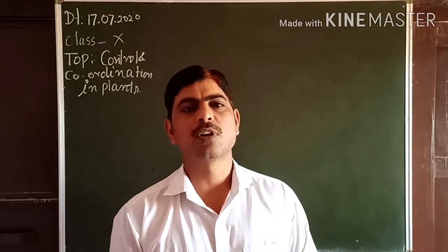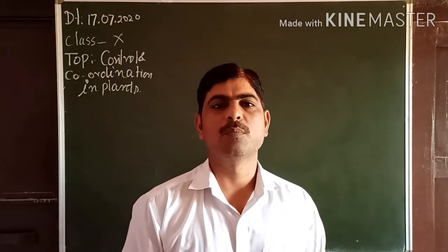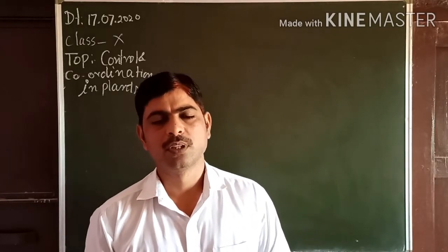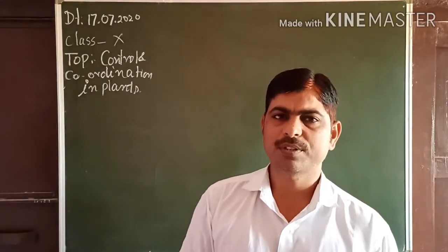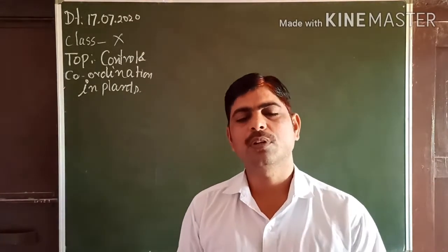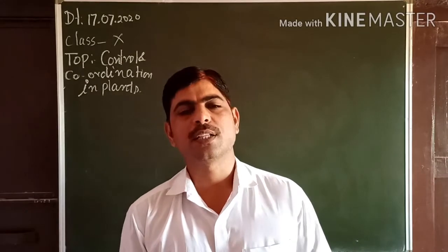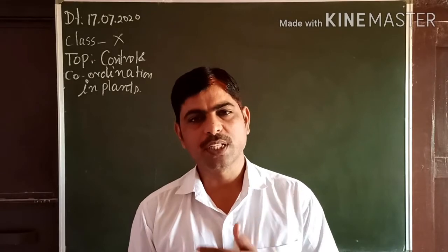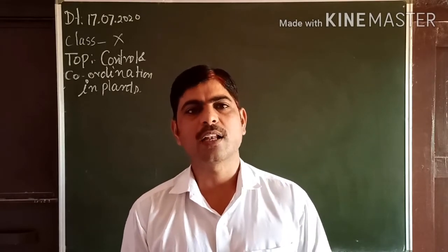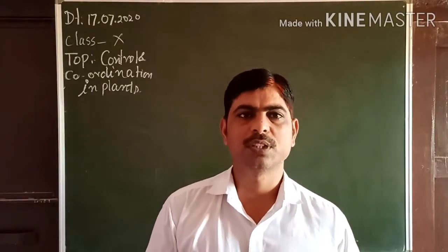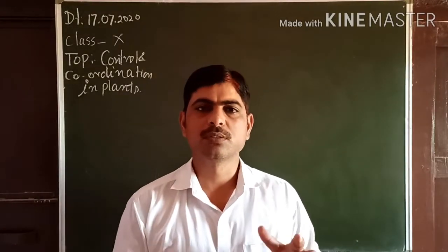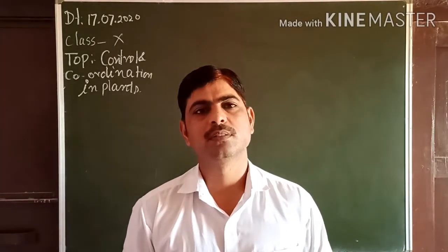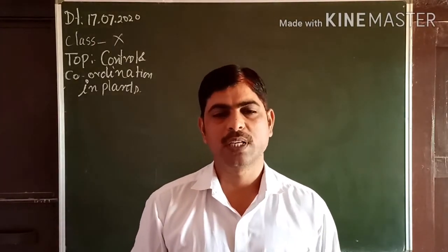It is because of plant hormones, also called phytohormones. Plants do not have the nervous system, so they do not get information regarding changes in the environment quickly, and they are also not able to respond quickly. But still they respond — just at a slower rate.